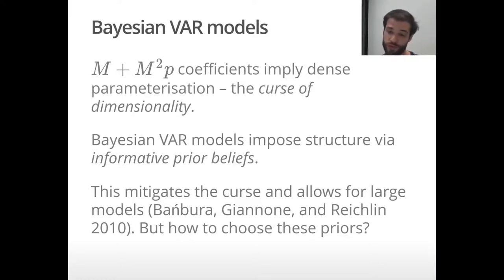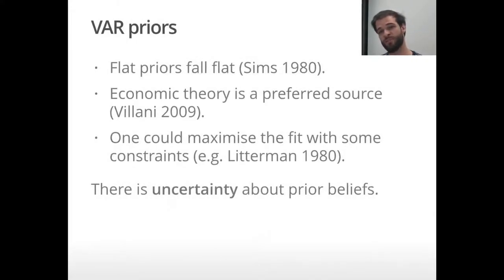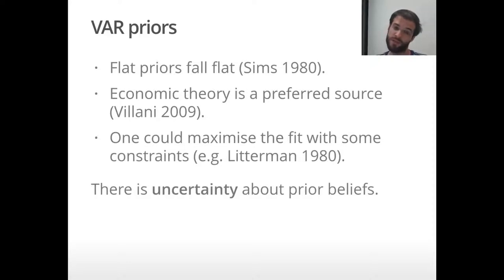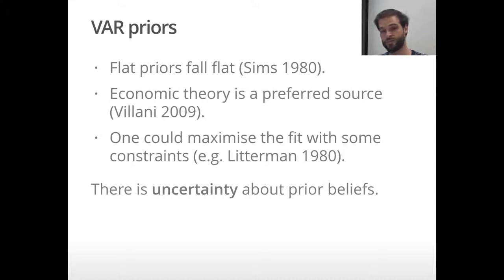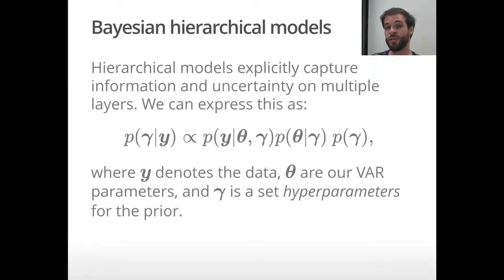The issue is how to choose these priors and how to choose their parameters. In the multivariate context, flat priors don't work as well and you need some information in your prior. A preferred source is economic theory, as demonstrated by Villani who places his priors on the steady state, which is usually well understood by economists. Another approach is to maximize the fit with respect to the parameter. The key takeaway is that there's uncertainty about these prior parameters, and in a Bayesian hierarchical model this uncertainty and extra information present in the data can be captured.